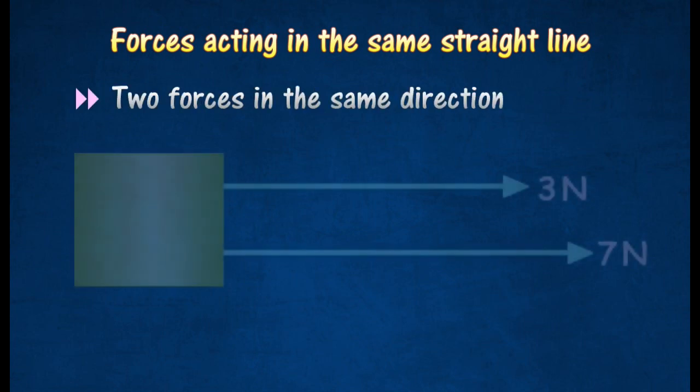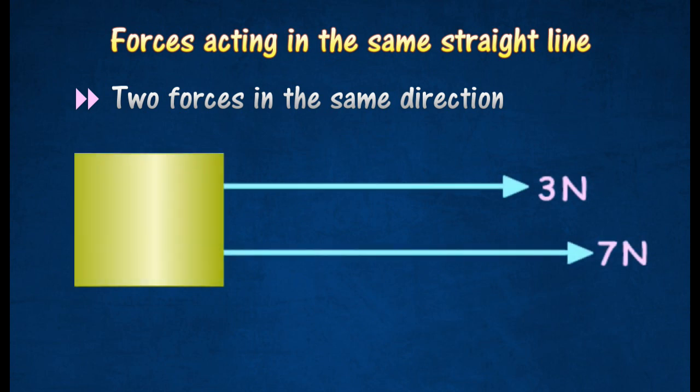For example, when two forces of 3 N and 7 N act together towards the same direction, its resultant force is 10 N.